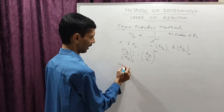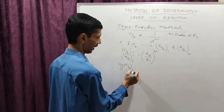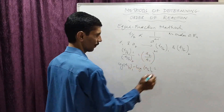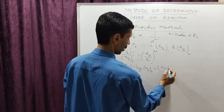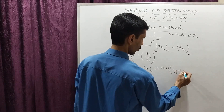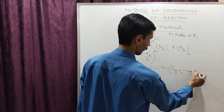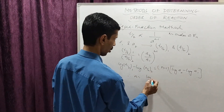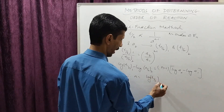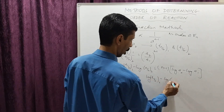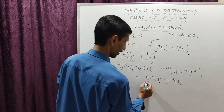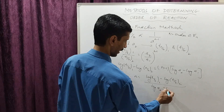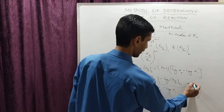Taking logarithms, log of T half 1 minus log of T half 2 is equal to n minus 1 times the quantity log of a2 minus log of a1. Therefore, n equals log of T half 1 minus log of T half 2, divided by log of a2 minus log of a1, plus 1.